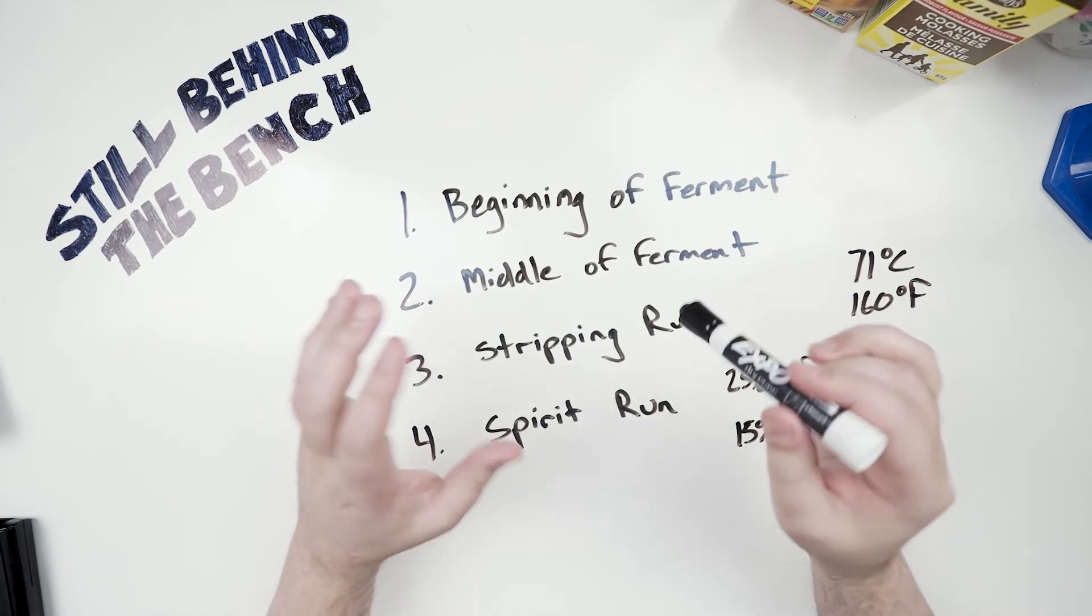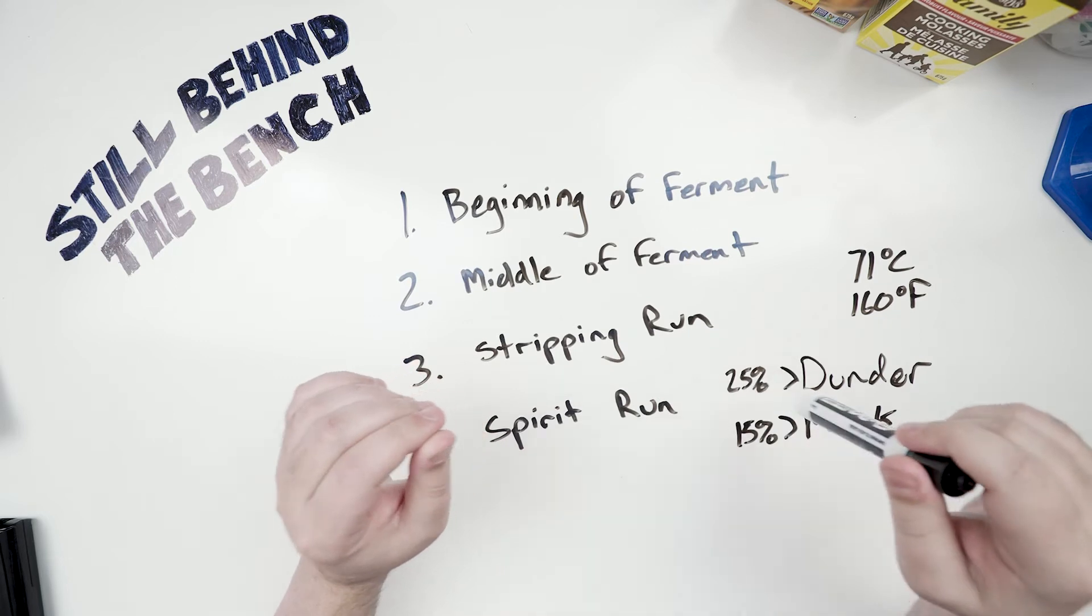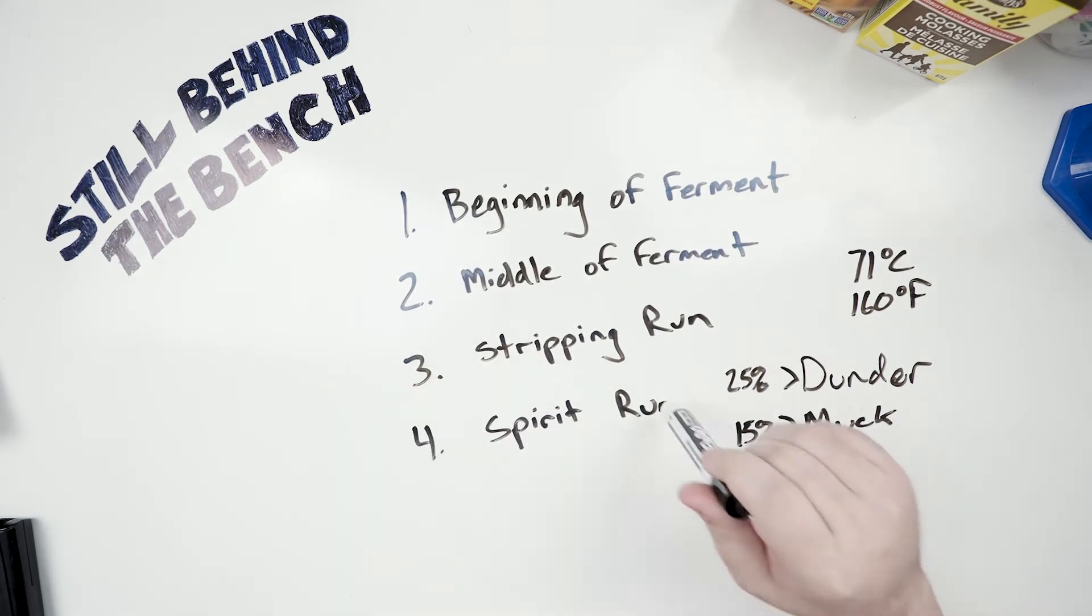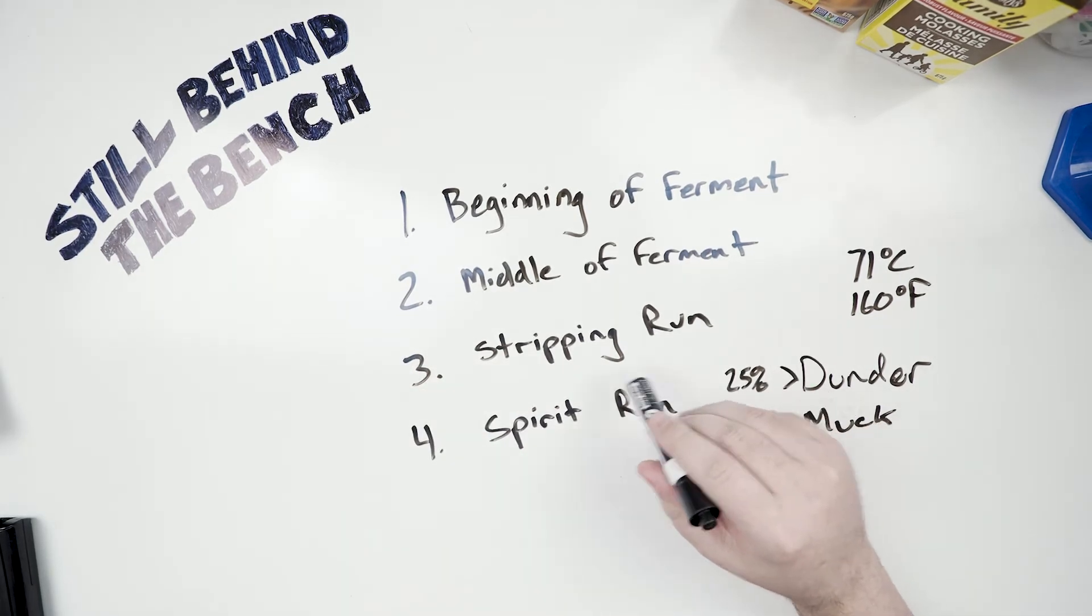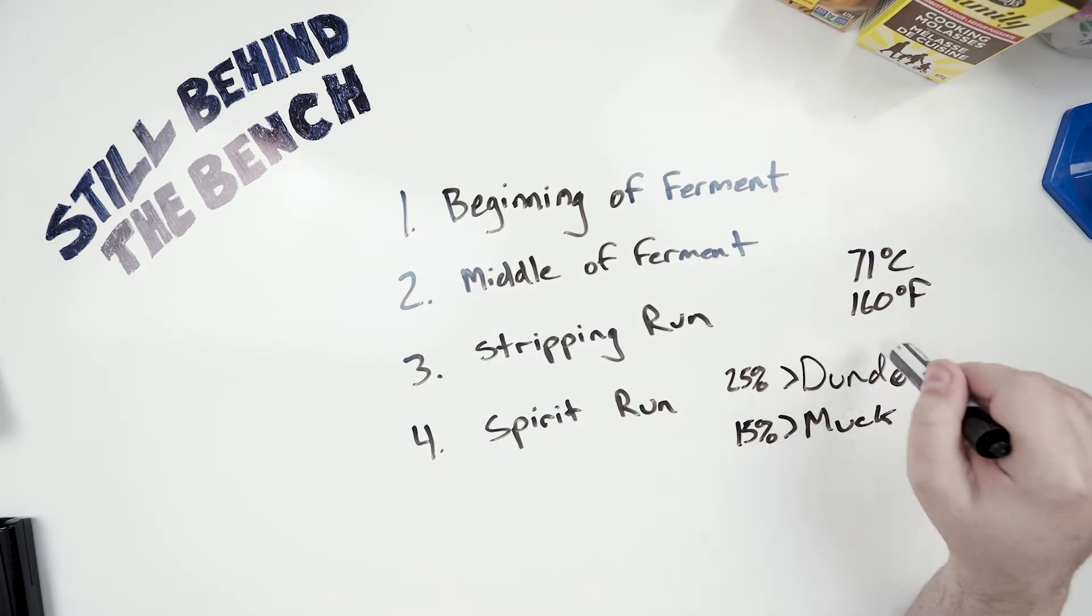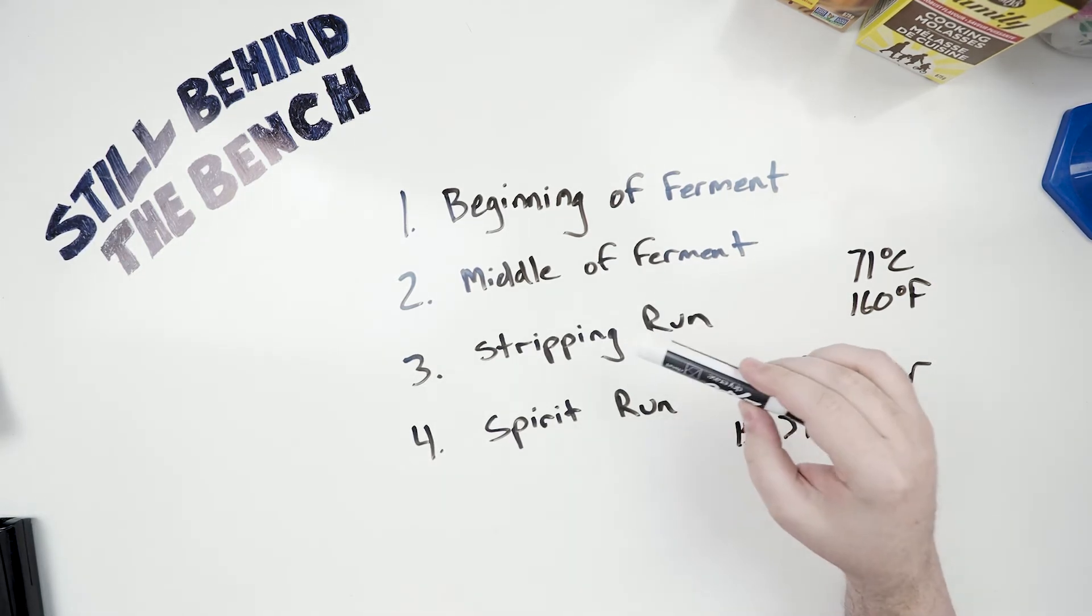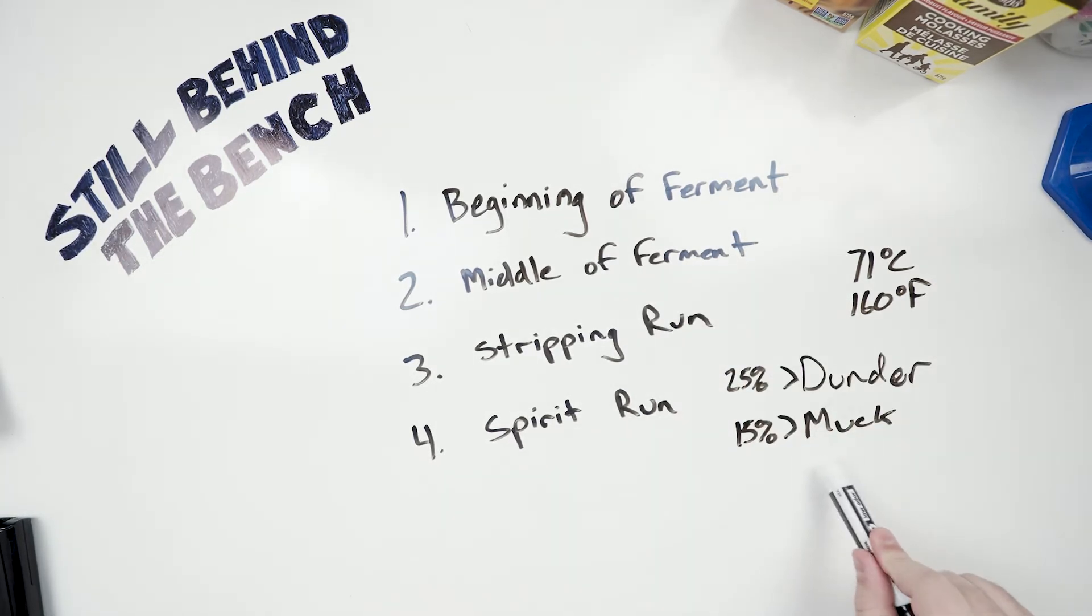Finally though for my experiences and what I've read of others experiences, the best time to use muck is during your spirit run where there is a maximum amount of alcohol for those organic acids to react with and create those estery rum oils. Generally you can use the dunder whenever you want, there will already be esters and organic acids in there and those acids will probably react with more of the alcohol that's produced but it won't happen as much as it will with the muck.